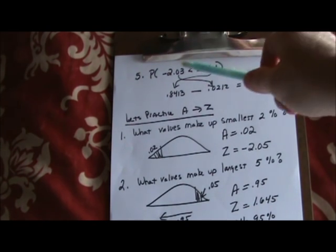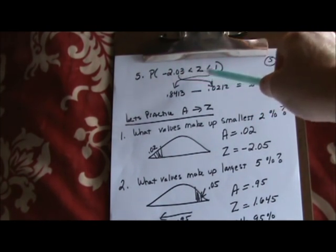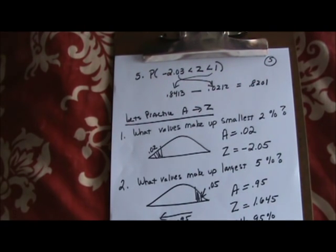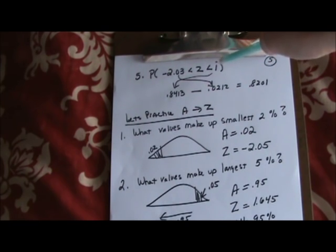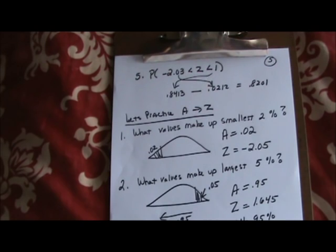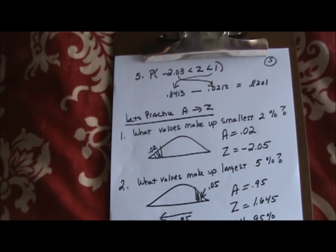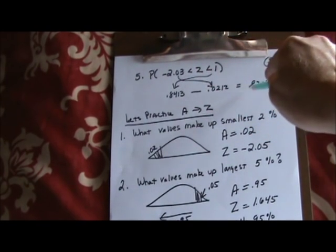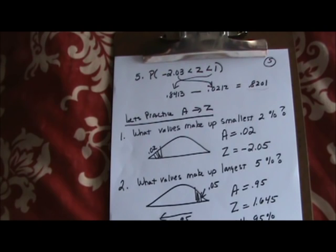Let's practice: probability that z is between negative 2.03 and 1. We are not subtracting the z-scores themselves. Look up z = 1.00 on the chart — you should see 0.8413. Then look up z = negative 2.03 — make sure you look up negative 2.03, not negative 2.3. You should see 0.0212. Subtract: 0.8413 − 0.0212 = 0.8201. That's our final answer for a stuck-in-between problem.